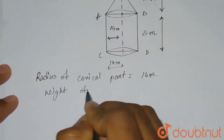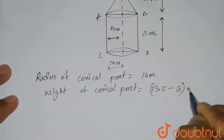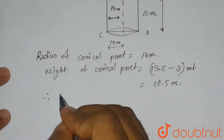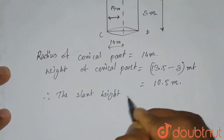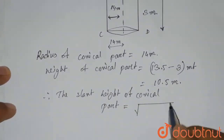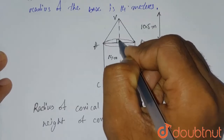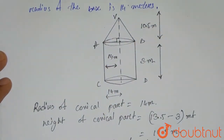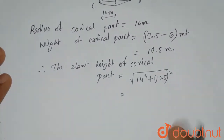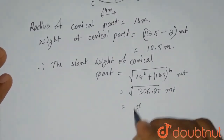The height of the conical part is 13.5 minus 3 meters, which is equal to 10.5 meters. Therefore, the slant height of the conical part will be equal to root under (14² + 10.5²). Since this is a right angle cone, we use Pythagoras theorem. So the slant height equals root under (196 + 110.25) = root under 306.25, which equals 17.5 meters.